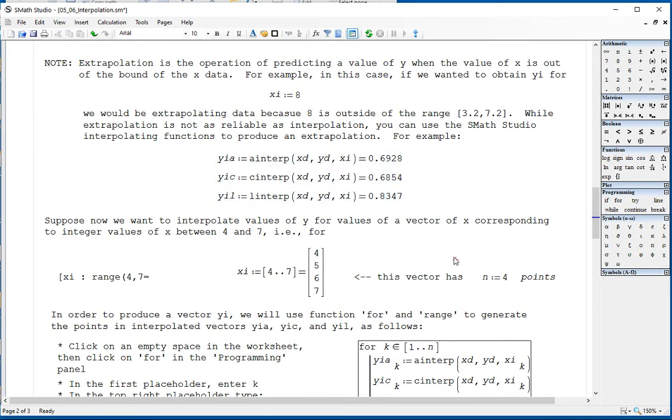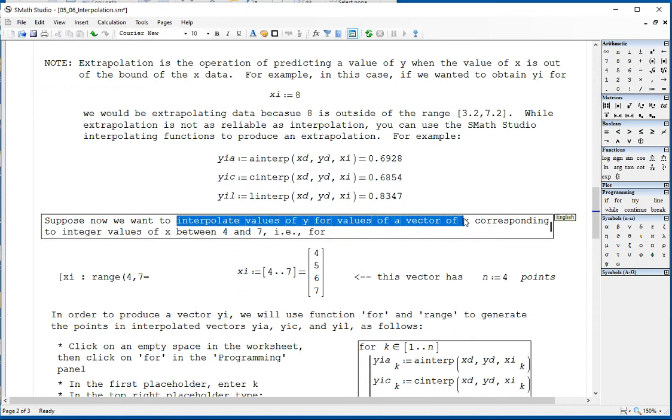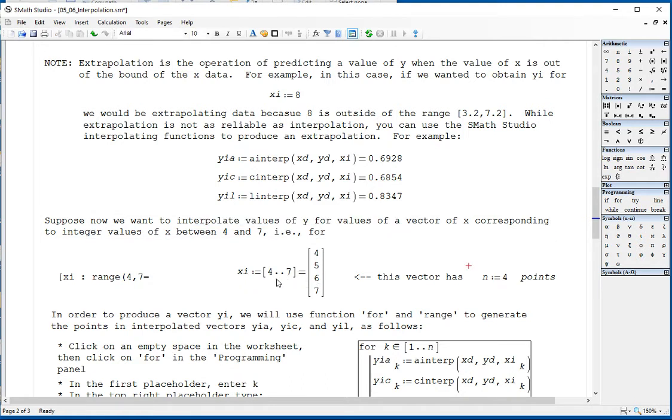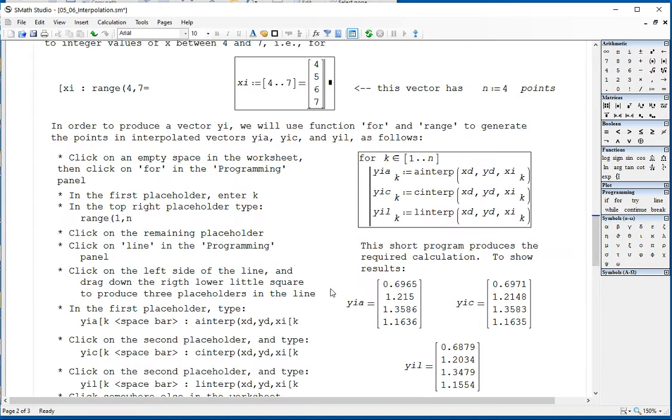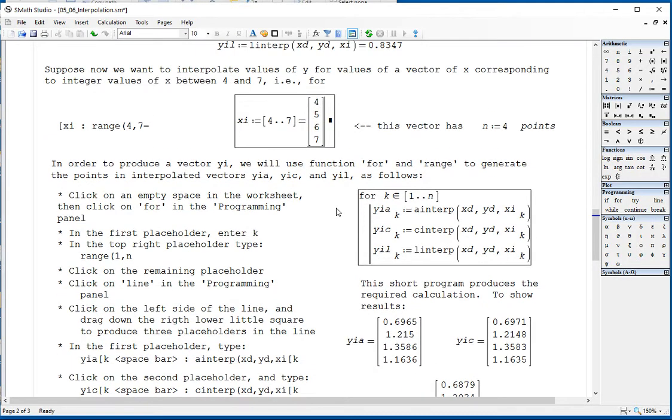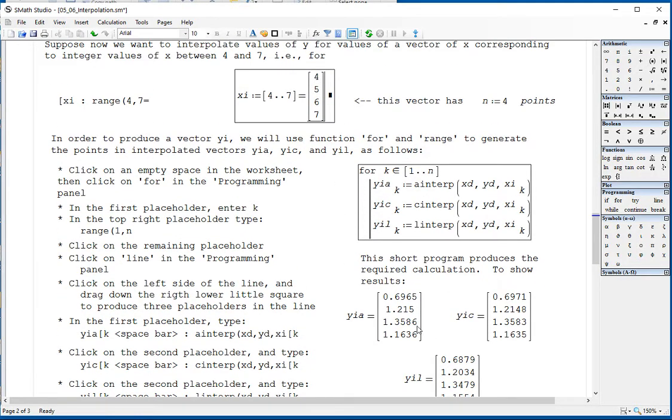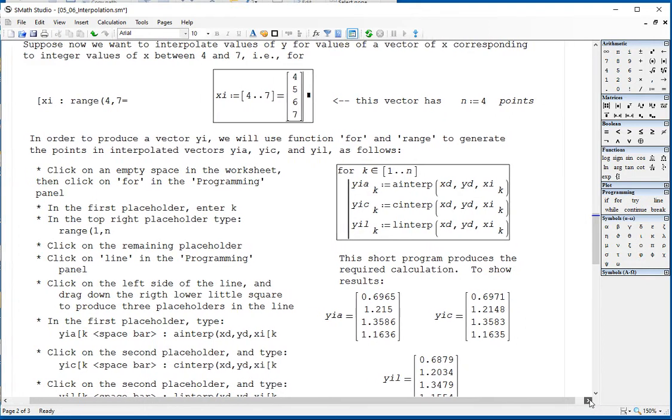Now, suppose that you want to interpolate values of y for a vector of x corresponding to integer values between 4 and 7. So you create a range called xi from 4 to 7. And then we're going to produce a for loop to interpolate the corresponding values. To create this for loop, I'm going to do it.